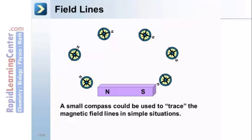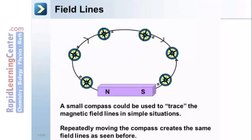Eventually, you will get a nice picture of where the magnetic field lines go. Repeatedly moving the compass creates the same field lines that we saw in the previous diagram.